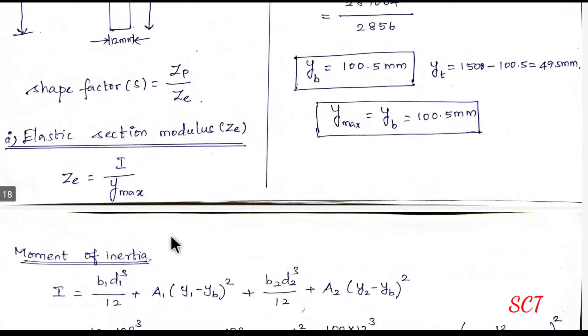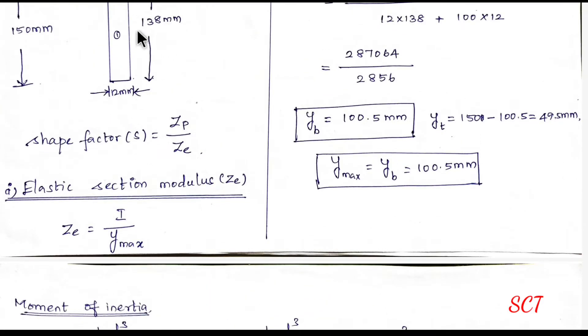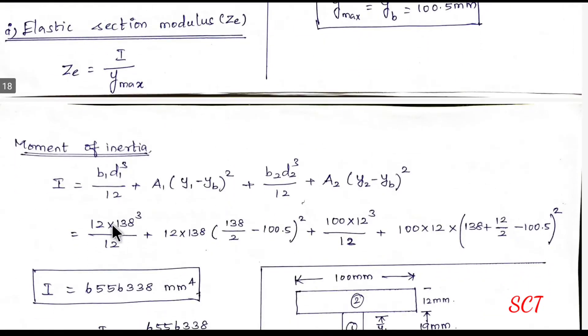The first section is B1 is 12. D1 is 138. So 12 into 138 cube divided by 12. Area 1 is 12 into 138.